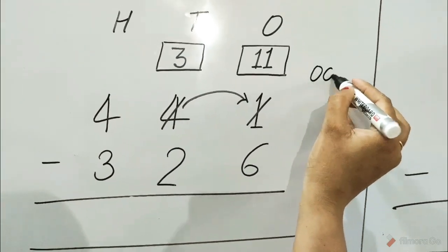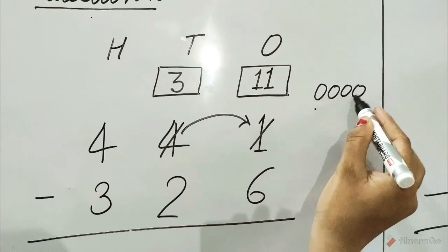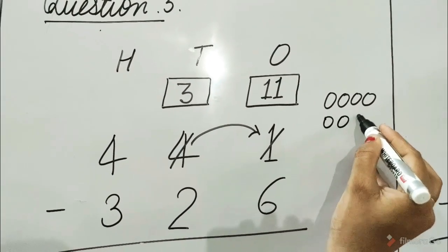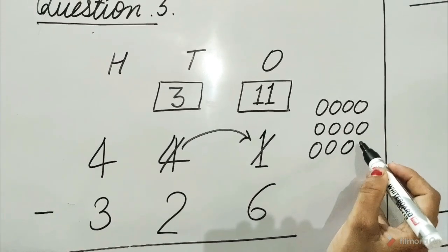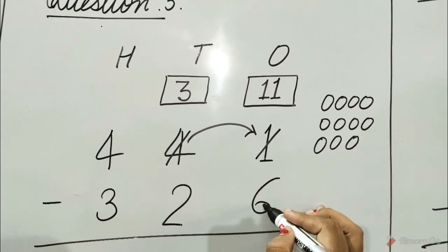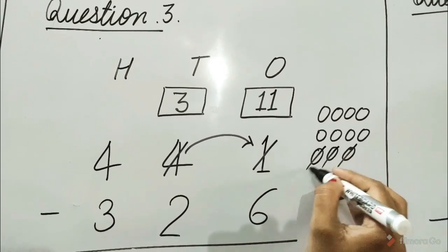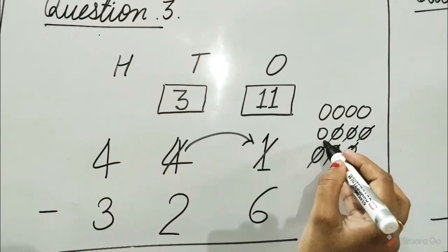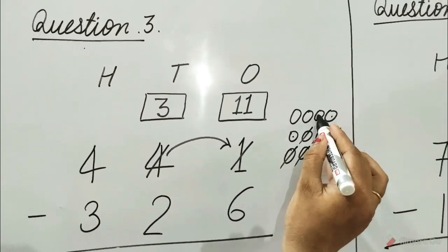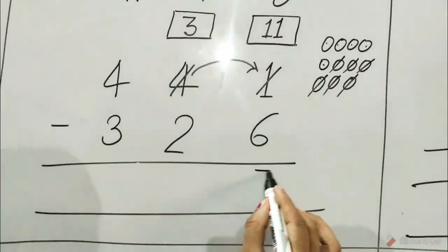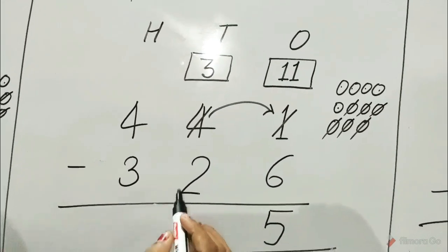Now draw 11 circles: 1 through 11. And cut 6 circles from it: 1, 2, 3, 4, 5, 6. Count all the remaining circles: 1, 2, 3, 4, 5.